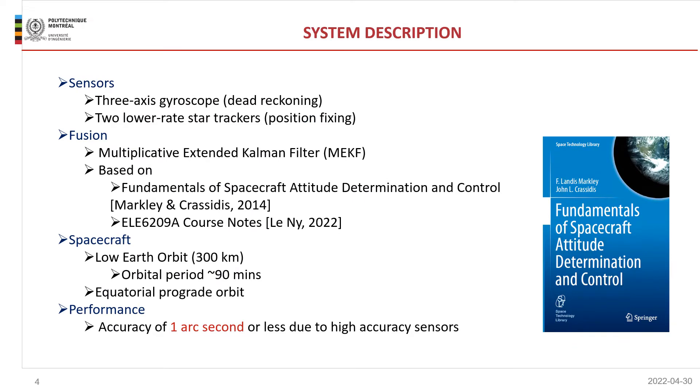Our system has two types of sensors, one 3-axis gyroscope for dead reckoning and two star trackers for position fixing. This combination of sensors is very popular in the space industry and it's very often seen on spacecrafts. We're going to fuse the measurements from the sensors using a multiplicative extended Kalman filter. The method that we used to develop this filter is based on the book on the right by Markley and Crassidis. It's a very thorough book. We also relied on the course notes.